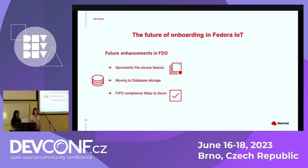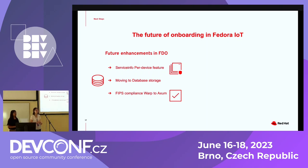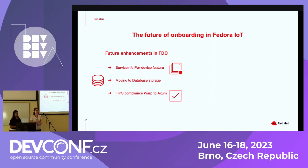This is related to the future of Ignition. Ignition is developed by the CoreOS team. We don't support everything Ignition does, so we are working towards enabling file system customizations during the onboarding process. Right now that is done in the image building process, and we have static partition tables, so you cannot change them without changing the code in OSBuild Composer. All of the upcoming features will be targeting Fedora 39.